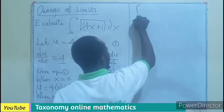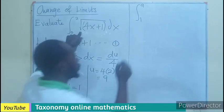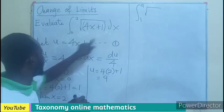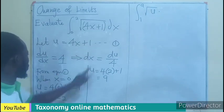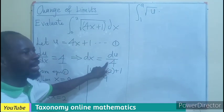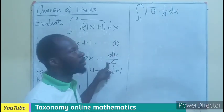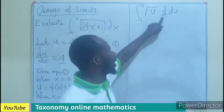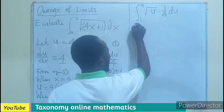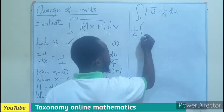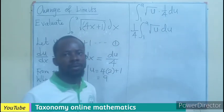So, the integral from 1 to 9 of the root of all of these, which is now going to be U times the X, which is now going to be 1 over 4 DU. But we know that anytime there is a constant, the constant can go out of the integral sign. Meaning, I can have 1 out of 4 integrals spanning from 1 to 9, the root of U, DU.